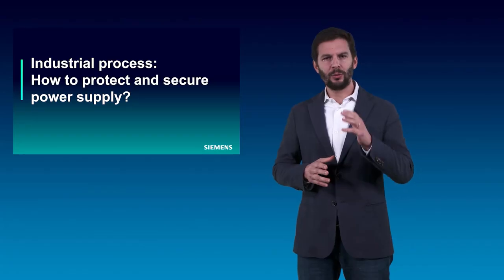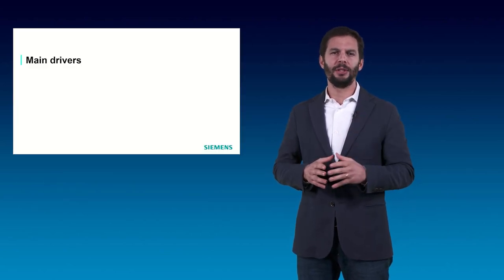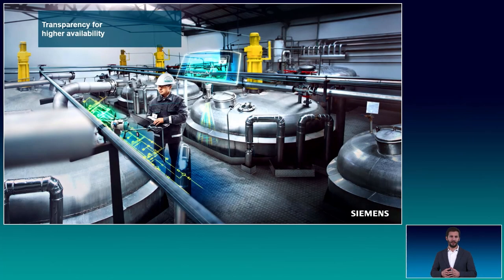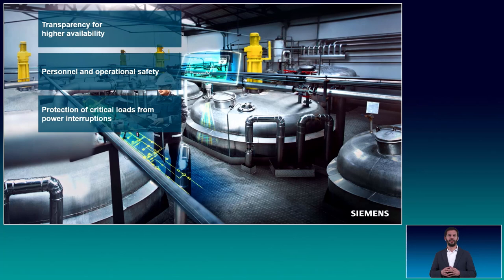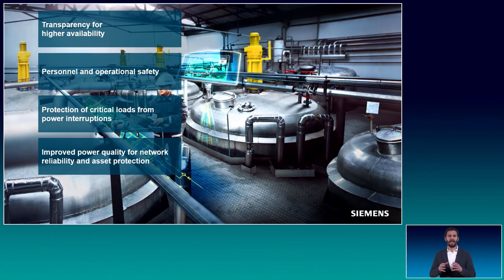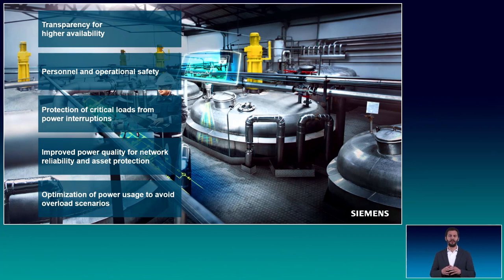So when looking at the industrial process, how to protect and secure power supply? First, let's have a look into the main drivers. Transparency for higher system availability, meaning fast information for the operator on fault type and location. Personal and operational safety — power failures can affect the safety of personnel and material, leading to costly downtimes and injuries. Protection of critical loads from power interruptions can be achieved through automated response to failures with load-sharing or self-healing schemas. Improved power quality for network reliability and asset protection is very relevant for the life cycle of existing devices. And finally, optimization of power usage to avoid overload scenarios, which implies automatic generation control to ensure sufficient power reserves.